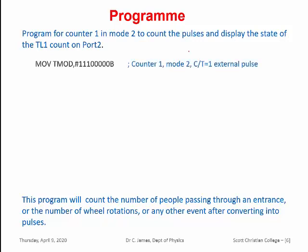The first instruction is MOV TMOD register. This is the control word to set Counter 1 in mode 2, and also CT equal to 1 for external pulse. The next instruction loads TH1. This is the initial value to be stored in the higher register TH1, which will automatically load into TL1.